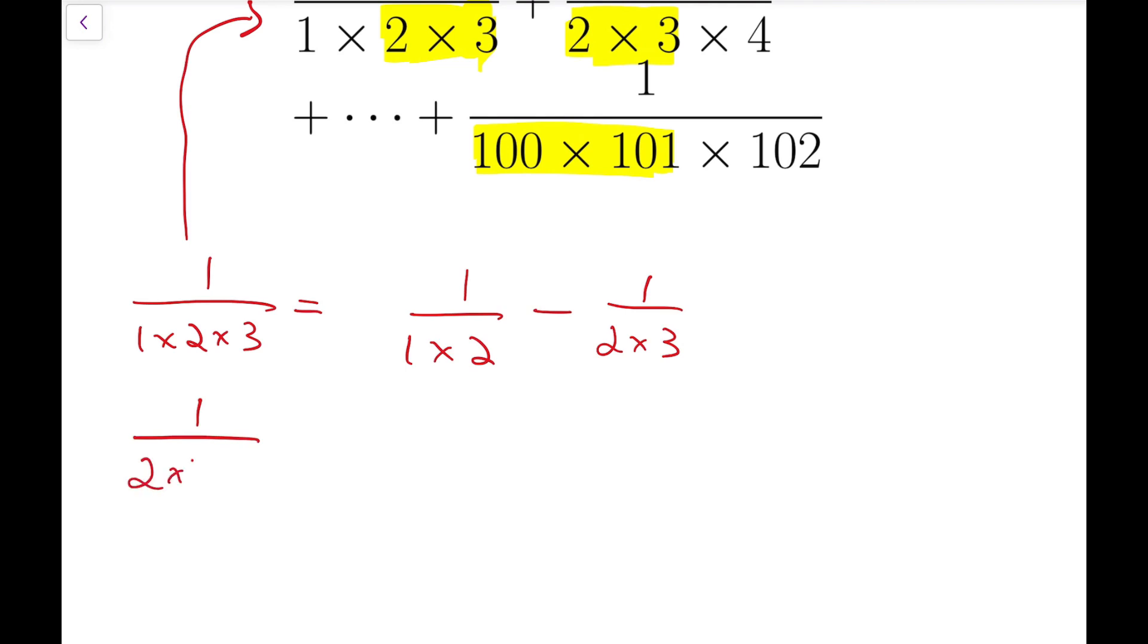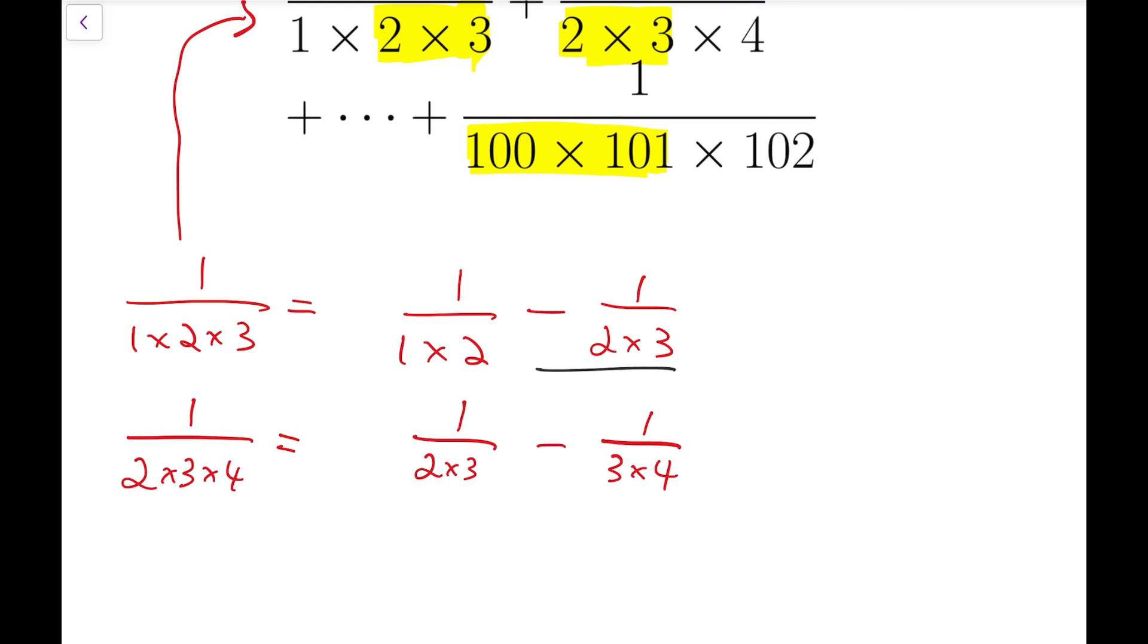Similarly, I'm going to split this fraction into this form. Now if these sums are really true, then we have minus 1 over 2 times 3. And down below, because we're adding these fractions, I'm adding the same fraction afterwards. So then they will cancel out.